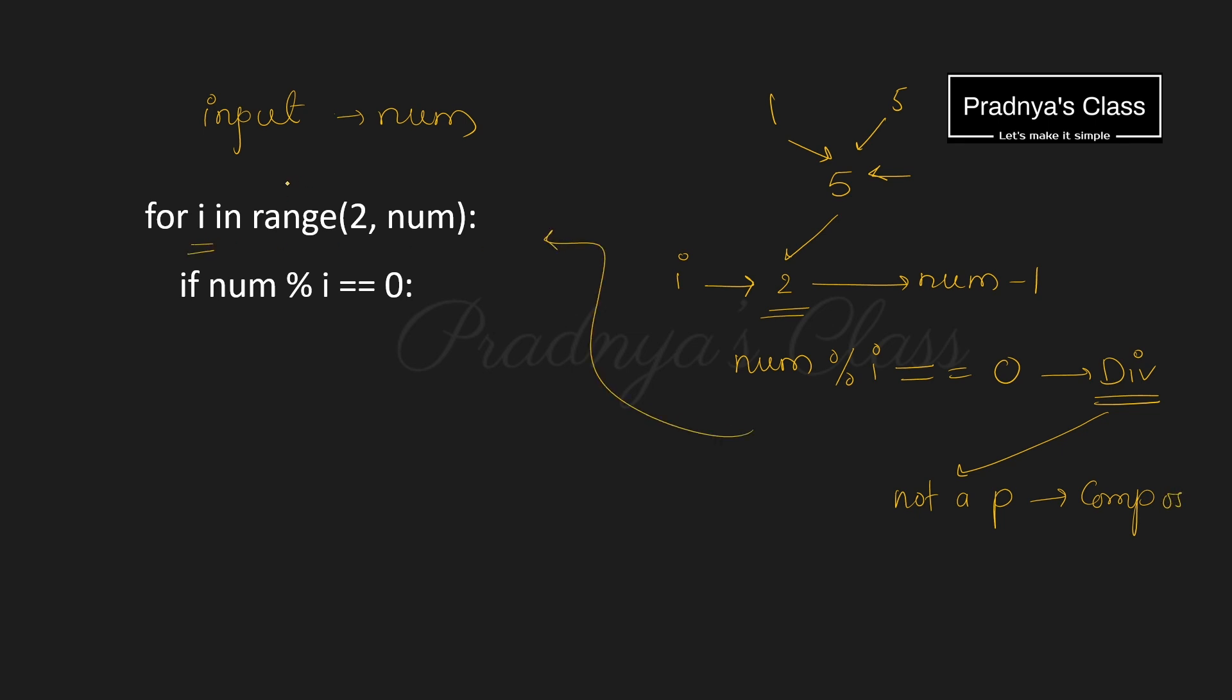The code will look like this. The value of i will run from 2 to 1 less than the number. Using modulus operator we will compare the remainder whether it equals 0 or not. If it equals 0 means the number is divisible by i. It means this number has a divisor other than 1 and the number itself. It is nothing but the definition of composite number.